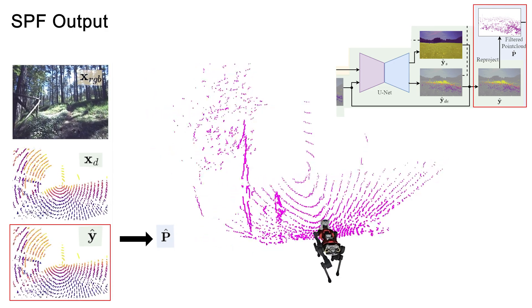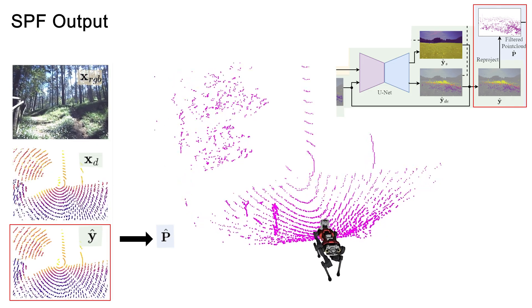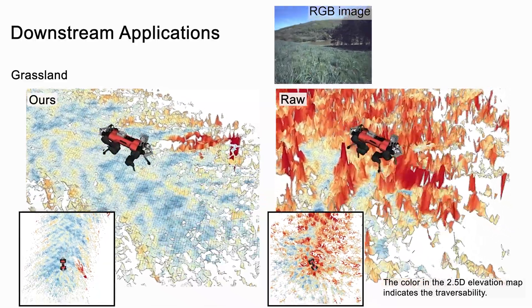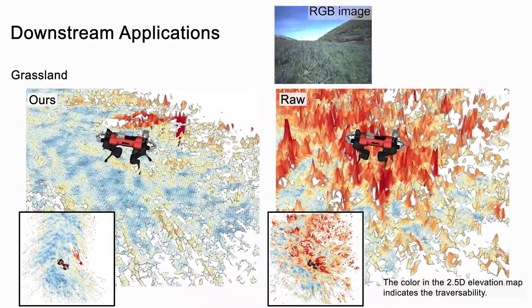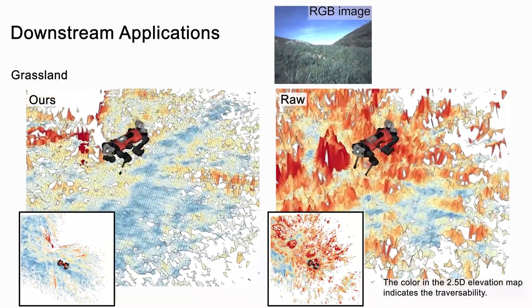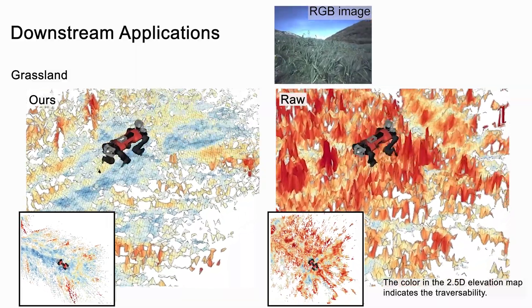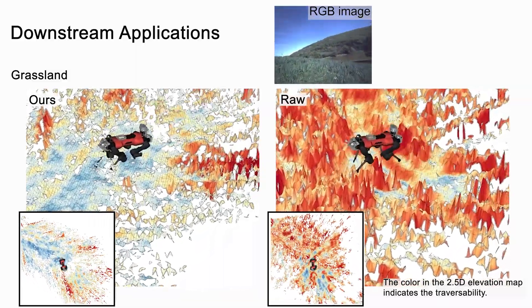The prediction can be re-projected to 3D space for downstream applications. We feed our filtered point cloud and the raw point cloud to the elevation map and traversability estimation. The geometry shows the elevation map and the color indicates the traversability. Our method filters high grass, resulting in a smoother elevation map.